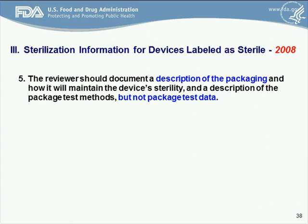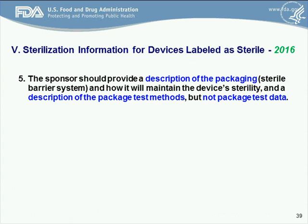The final item — in 2008, we were looking at the description of the packaging designed to maintain the device's sterility, but not the package data itself. When we move ahead to 2016, we're looking at a description of the package designed to maintain sterility, and a description of the package test methods — a summary of exactly what simulations were conducted, what testing was done. For example, what sort of accelerated aging may have been conducted, how that was followed by seal strength testing, what sort of simulated shipping and handling was conducted, and what sort of package integrity testing was done after that. One additional note: for some device types reviewed by some divisions, they do want to see package test data, so check with your relevant division.